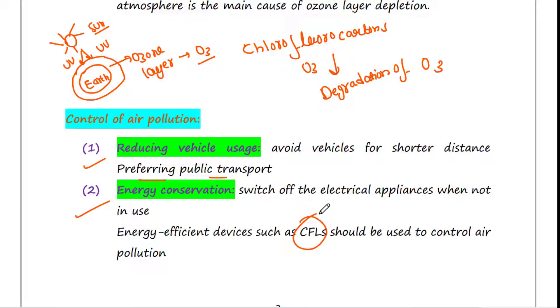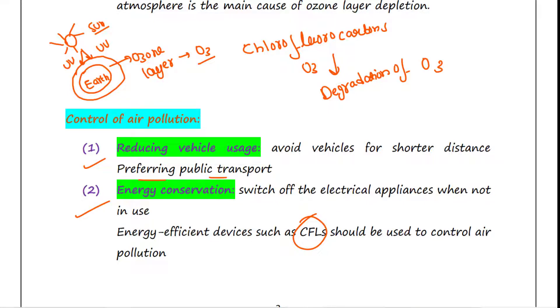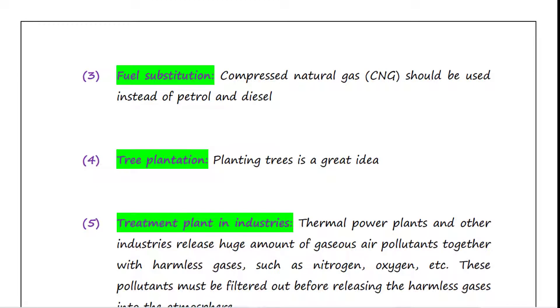Next is fuel substitution. Compressed natural gas or CNG should be used instead of petrol and diesel since CNG burns more efficiently. Unlike petrol and diesel, very little of CNG is left unburnt, so incomplete burning is less here, so less CO gets produced when we use CNG.